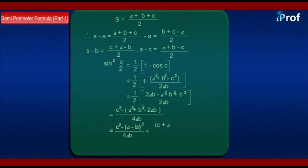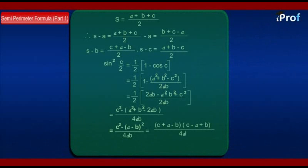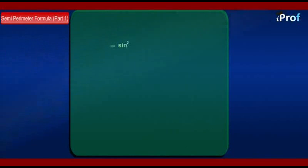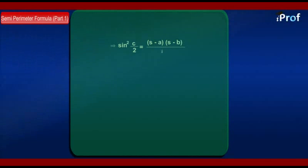This comes out to be equal to C² minus (A minus B)² divided by 4AB. That gives C² minus (A minus B)² factored as (C plus A minus B)(C minus A plus B) divided by 4AB. This becomes 2(S minus B) times 2(S minus A) divided by 4AB. Therefore, sin²(C/2) equals (S minus A)(S minus B) divided by AB.